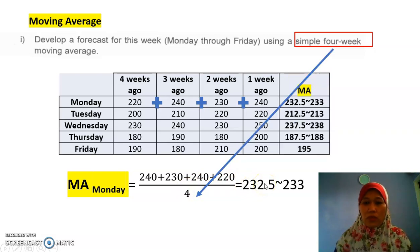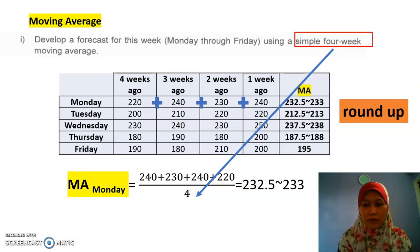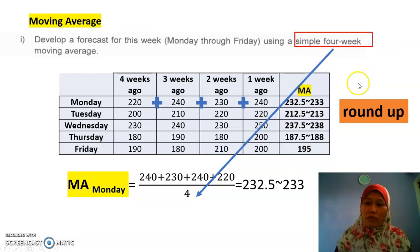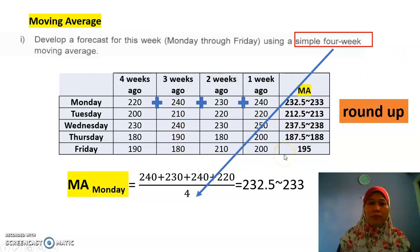Remember, we need to round up for forecasting because it's involved with the product. Then you have to fill up for Monday, Wednesday, Thursday, and Friday using the same process. That answers part one.